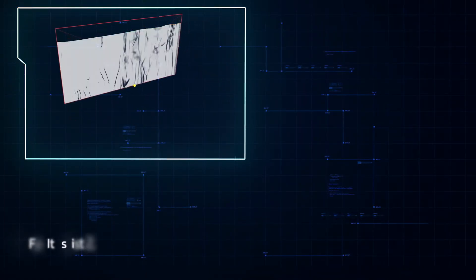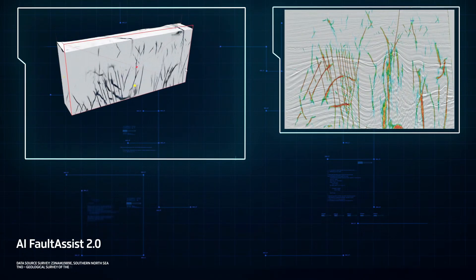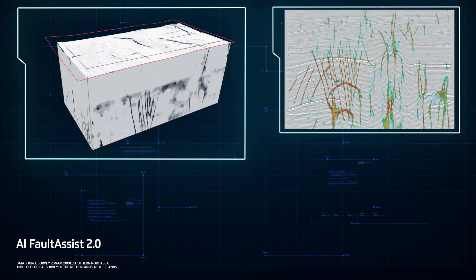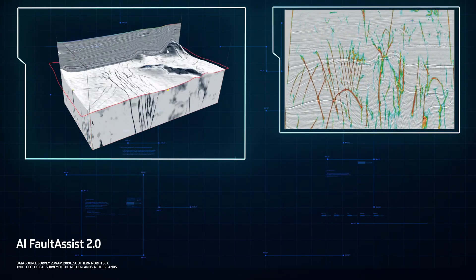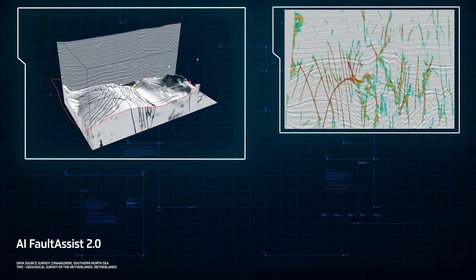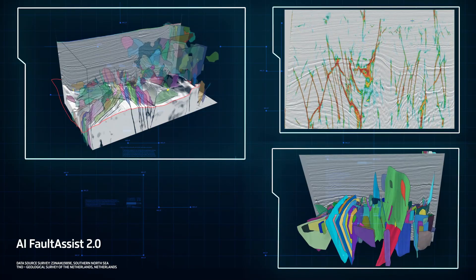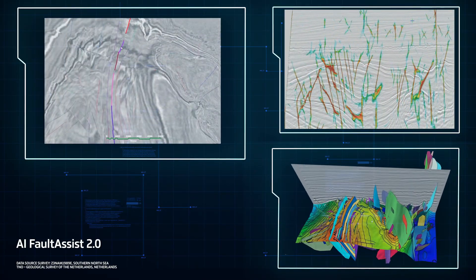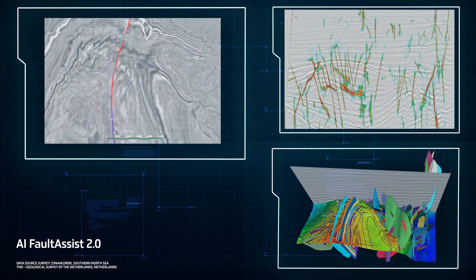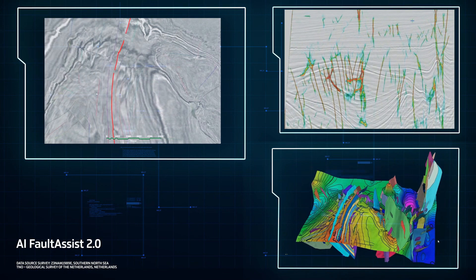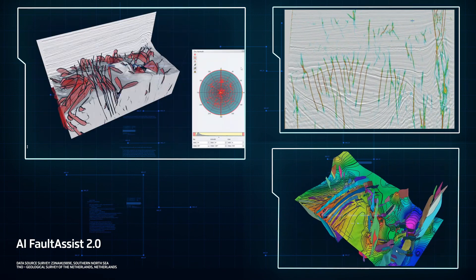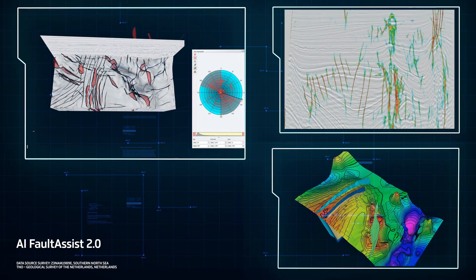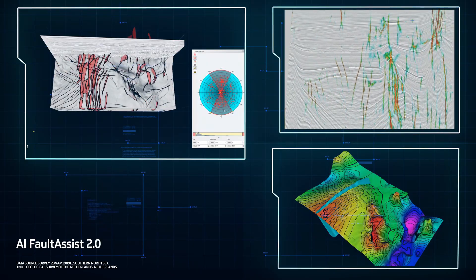AI Fault Assist 2.0, unveiled in 2024 — PaleoScan AI Fault Assist, developed in collaboration with Chevron, revolutionizes fault detection in this latest upgrade. Faster and more precise, it enhances fault interpretations, boosting speed and accuracy in volumetric structural analysis.